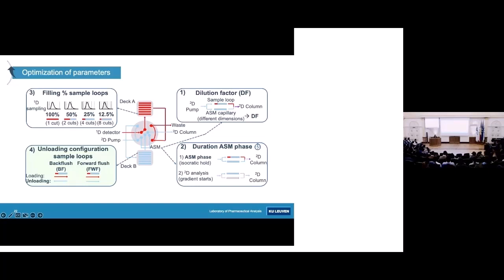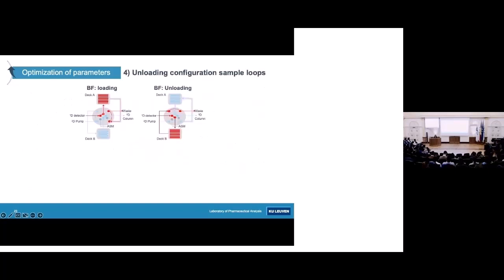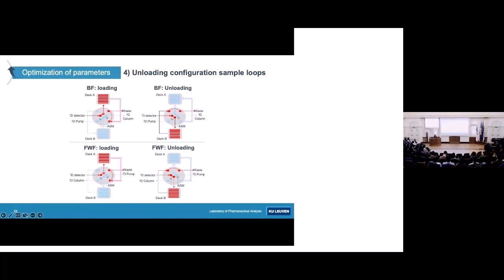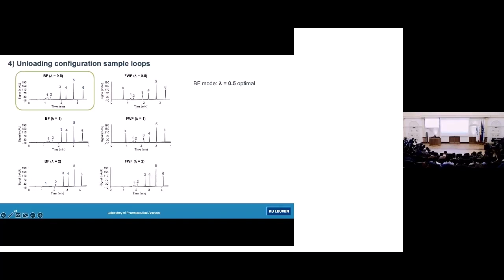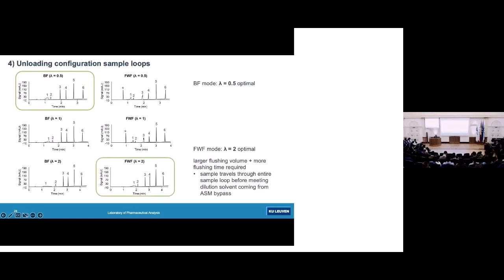The final parameter investigated was the unloading configuration of the sample loop — either back flush or forward flush. In back flush mode, the sample loop unloads in the opposite direction to how it loaded; in forward flush it unloads in the same direction. For back flush, a sample loop flush of 0.5 was optimal; for forward flush, flushing 2 times gave better results, likely because the sample must travel through the entire loop before reaching the column, requiring more volume and time. Since back flush takes shorter time and gives slightly better peak shapes, we decided back flush mode was optimal.